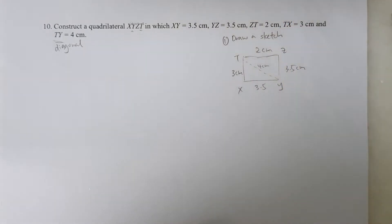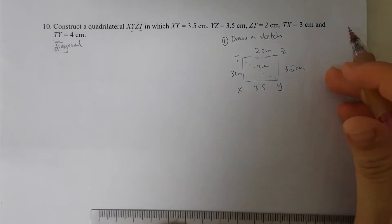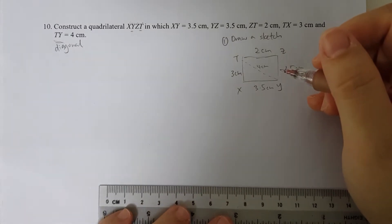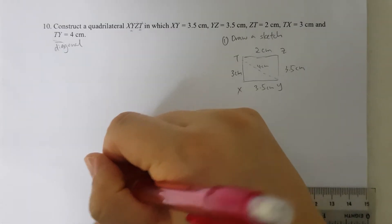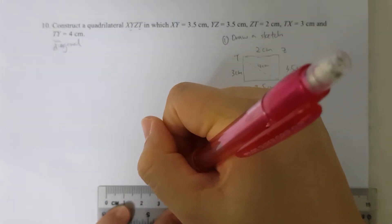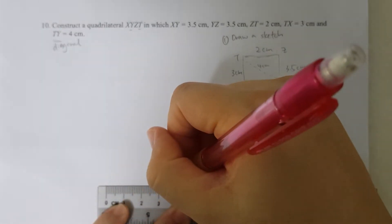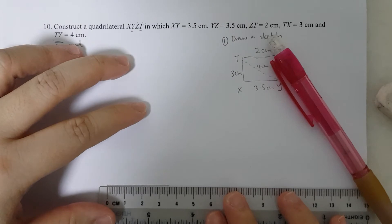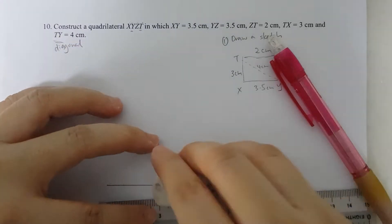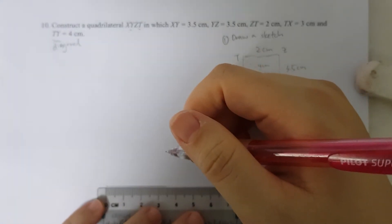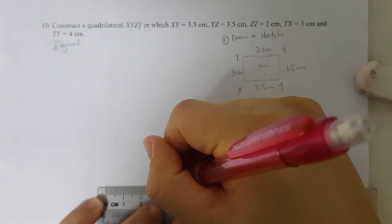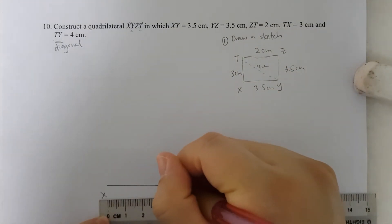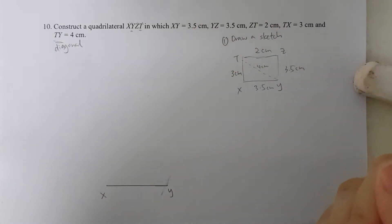I'm going to start by drawing XY, which is 3.5. So I will draw out a length of 3.5. Oops, I went a bit over. So XY is 3.5.